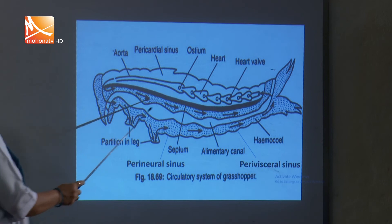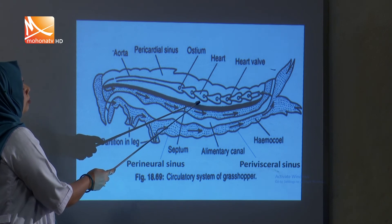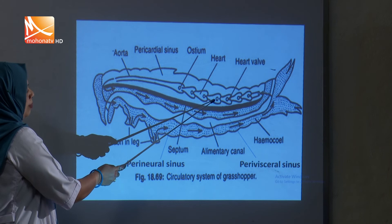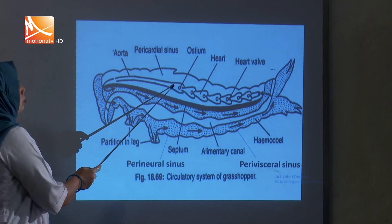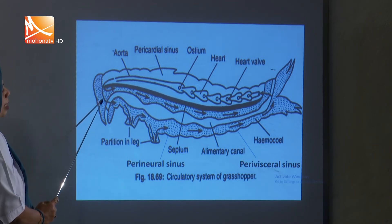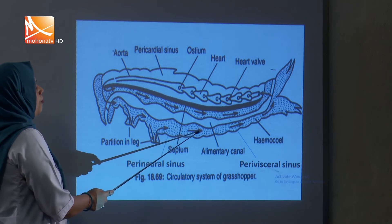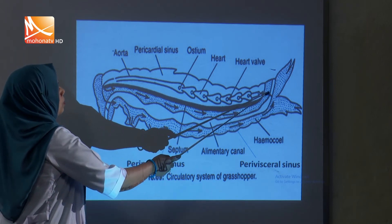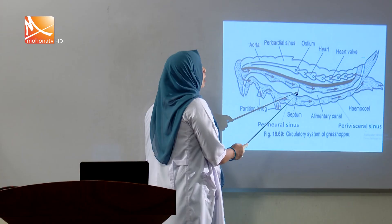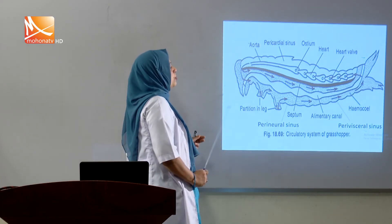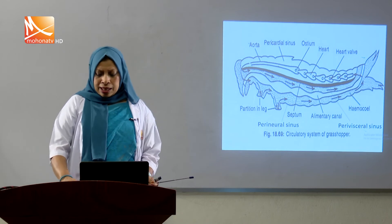Look at the figure. Blood enters from the pericardial sinus into the heart chamber through the ostia. When the chamber is filled, contraction forces blood through the dorsal aorta into the head sinus. From the head sinus, blood enters the perivisceral sinus and the perineural sinus. Then blood re-enters the pericardial sinus. The dorsal and ventral diaphragms which divide the coelom into three chambers are perforated, so blood can easily communicate between chambers.